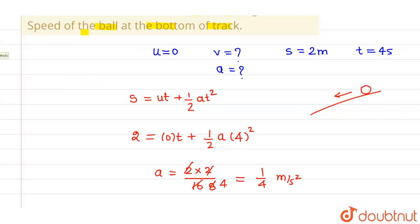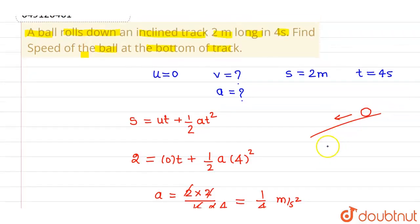After finding acceleration, I have to find out velocity, so I will be using the equation of motion given by v = u + at. Initial velocity is 0, so final velocity will be acceleration which is 1/4 meter per second squared into time which is 4.